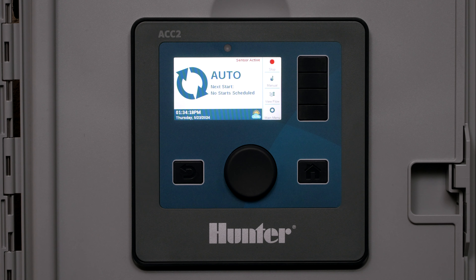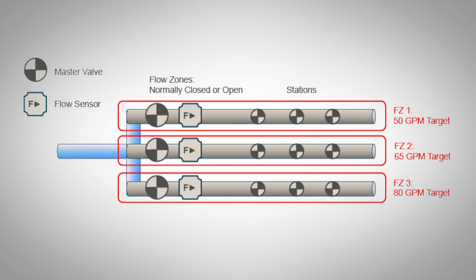Flow management is the process of scheduling stations with learned flow on any given day to reach a user-specified flow rate within a given flow zone. It is a flow optimizer and flow balancer that allows the controller to schedule stations on in any order to compress the most watering into the shortest watering window at safe velocities. Flow management does not necessarily require the use of flow sensors, but it will be much more accurate if sensors are present and configured.